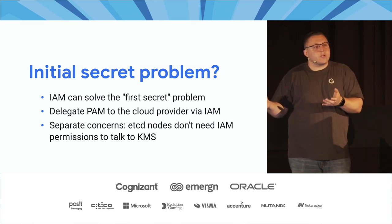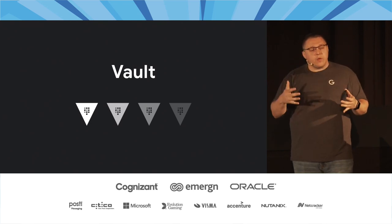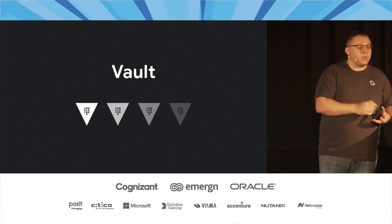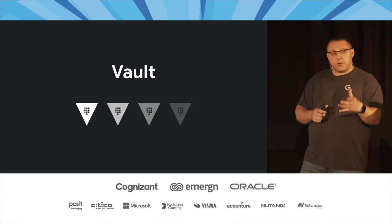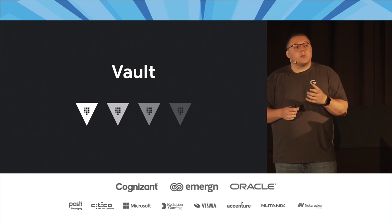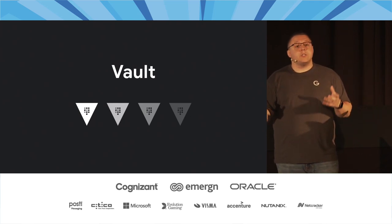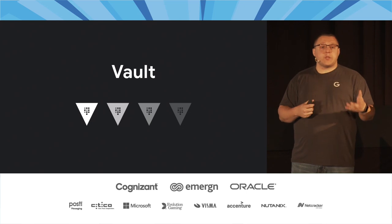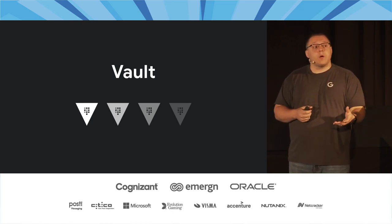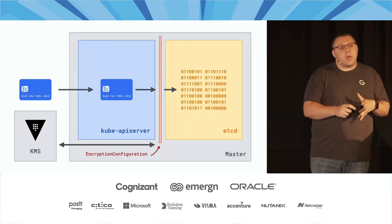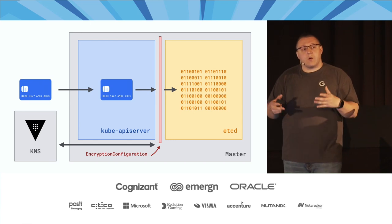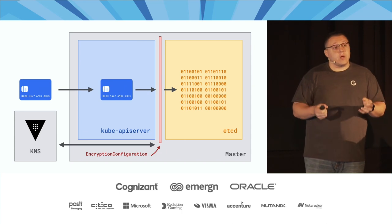HashiCorp Vault has various secrets engines and plugins. One of the key features is a key management service called Transit — named because data is encrypted and decrypted in transit — which can act as a KMS provider. You can run HashiCorp Vault or leverage it if you're already using it for other applications. All we do is replace the third-party KMS provider with HashiCorp Vault's Transit backend — running Vault on-premise inside your own data center and leveraging its Transit backend as the third-party key management service provider.